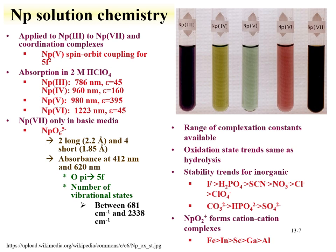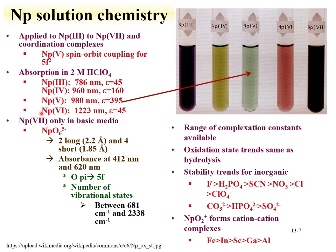The complex solution chemistry of neptunium can be explored across the range of oxidation states. Detailed modeling has been explored with neptunium-5, looking at spin-orbit coupling of the 5f electrons. Since neptunium species are colored, UV-visible spectroscopy is a useful tool for evaluating speciation. In 2 molar perchloric acid, neptunium-3 has an absorbance around 780 nm with an extinction coefficient of 45; tetravalent neptunium absorbs at about 960 nm with a larger extinction coefficient. Neptunium-5 has a very large molar absorptivity close to 400 and is in the near-IR region close to 1000 nm. Neptunium-6 is over 1000 nm (around 1200 nm) with a molar extinction coefficient of 45. Neptunium-7 is available only in basic media.